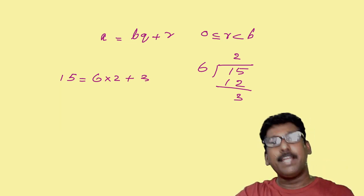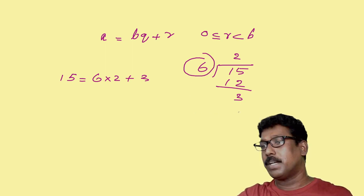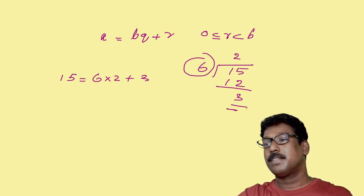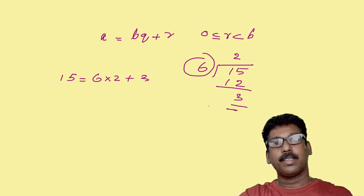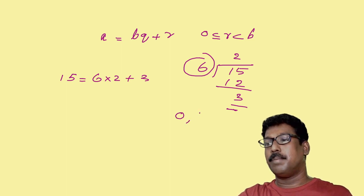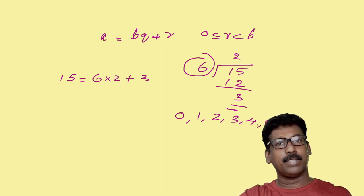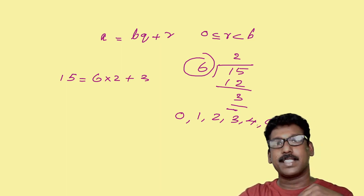Now, if you are dividing any number by 6, what are the possible remainders? Yes, it can be 0, 1, 2, 3, 4, or 5. It cannot be 6.